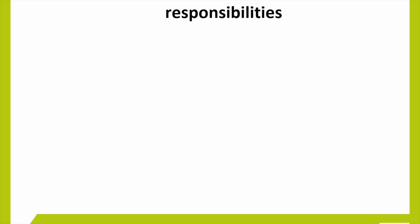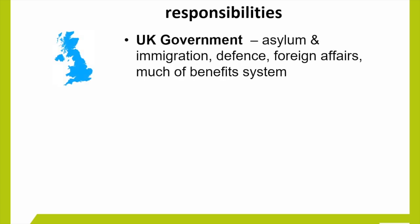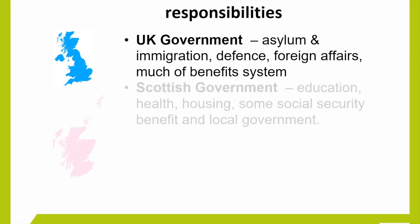Let's now look at levels of government in the UK and their responsibilities. The UK government is responsible for asylum and immigration, as well as defence, foreign affairs, much of the benefit system and a range of other things. The Scottish government is responsible for education, health, housing, some social security benefits and local government.